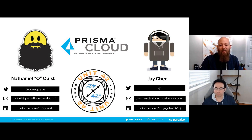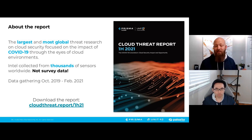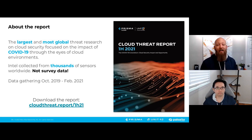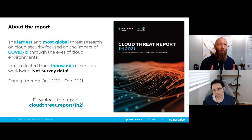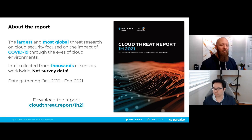Within this conversation, we're going to be talking primarily about the cloud threat report. This is something that Jay and I put out on a six-month basis — two per year. This latest one, published on April 6th, is specifically about COVID-19: the effect that COVID-19 had upon our industry and all industries, viewed specifically from a security perspective. You can find it at cloudthreat.report/1h21.